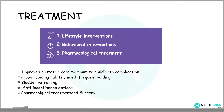The treatment of urinary incontinence encompasses three main goals: lifestyle interventions, behavioral interventions, and pharmacologic interventions. We aim to improve obstetric care to minimize complications that may predispose females to developing urinary incontinence. Appropriate voiding habits are part of lifestyle and behavioral modification — including timed urination, frequent voiding, bladder retraining exercises such as Kegel exercises, anti-incontinence devices, and pharmacologic treatment. Surgical treatment is also available.